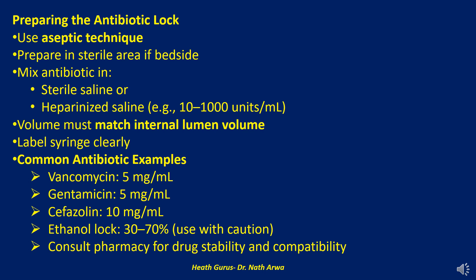We will now discuss preparation of antibiotic lock solution. Aseptic technique is required. If not pre-prepared by pharmacy, prepare solution under sterile conditions, preferably in a laminar airflow hood. The antibiotic lock solution is composed of antibiotic diluted in sterile saline or heparinized saline, typically 10 to 1000 units per milliliter of heparin. Typical antibiotic concentrations: vancomycin 1–5 mg/mL; gentamicin 1–5 mg/mL; cefazolin 5–10 mg/mL. Ethanol is also used in some protocols at concentrations of 30–70%. The final volume should match the internal volume of the catheter lumen, often 1 to 2 milliliters. Remember to check device specifications.